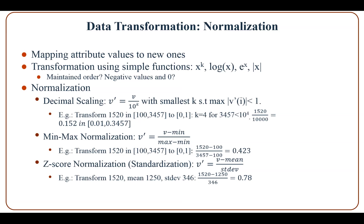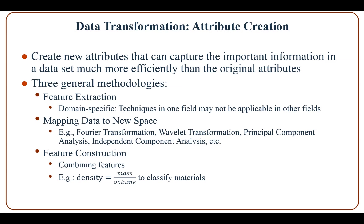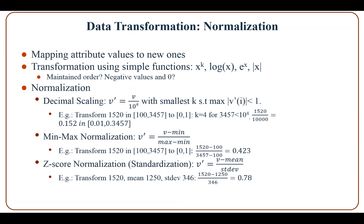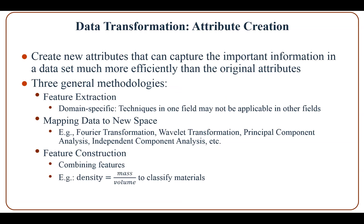The last method is z-score normalization. In this method, the mean is subtracted from the attribute values and then divided by the standard deviation. Attribute creation creates new attributes that can capture the important information in the dataset much more efficiently than the original attributes.